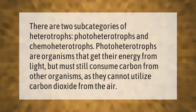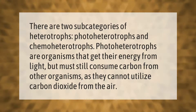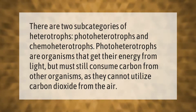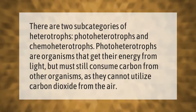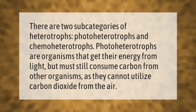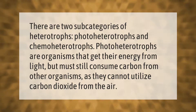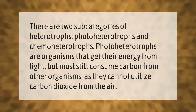There are two subcategories of heterotrophs: photo-heterotrophs and chemo-heterotrophs. Photo-heterotrophs are organisms that get their energy from light but must still consume carbon from other organisms, as they cannot utilize carbon dioxide from the air.